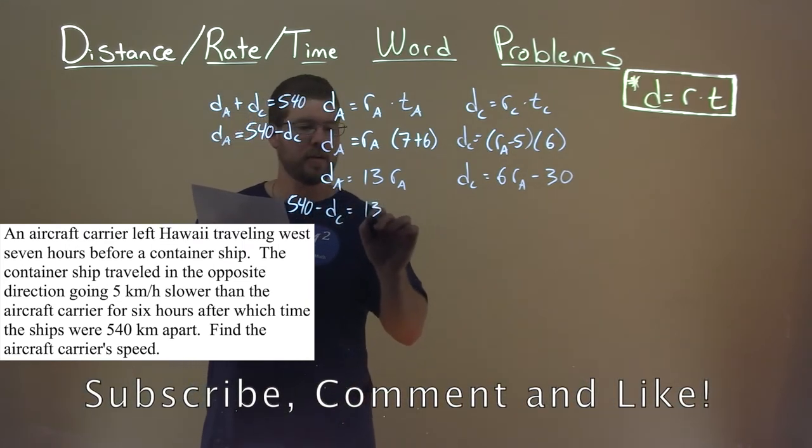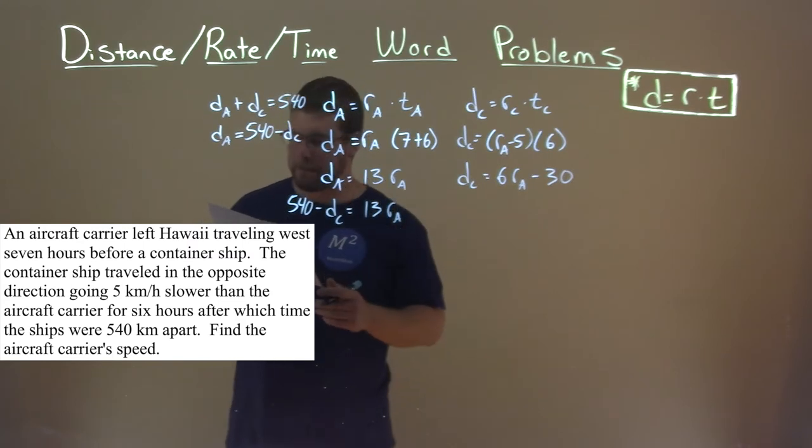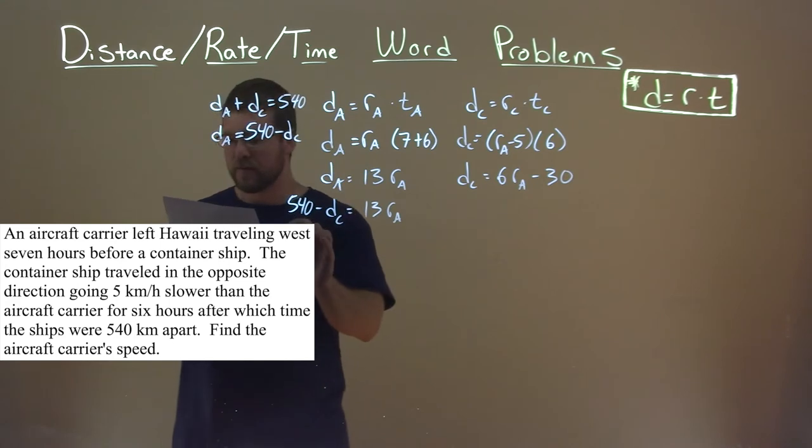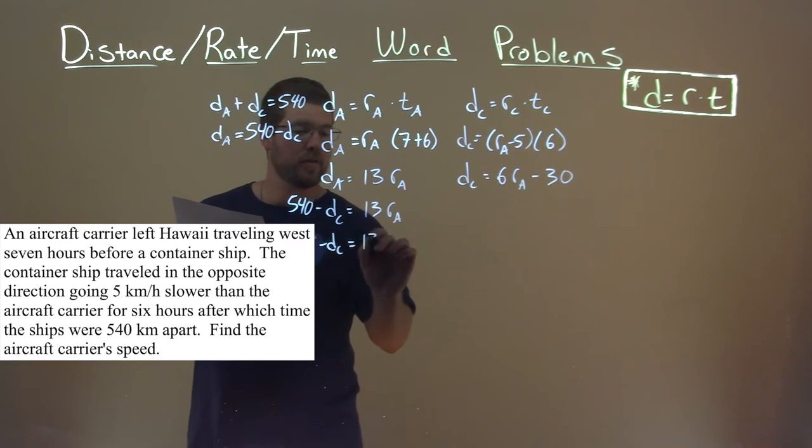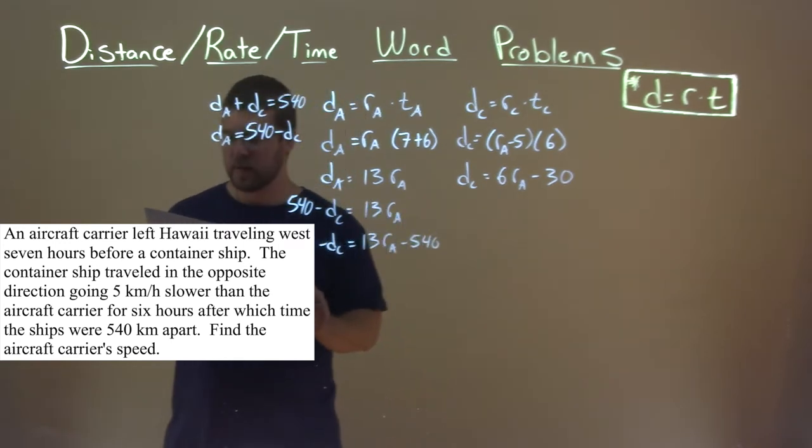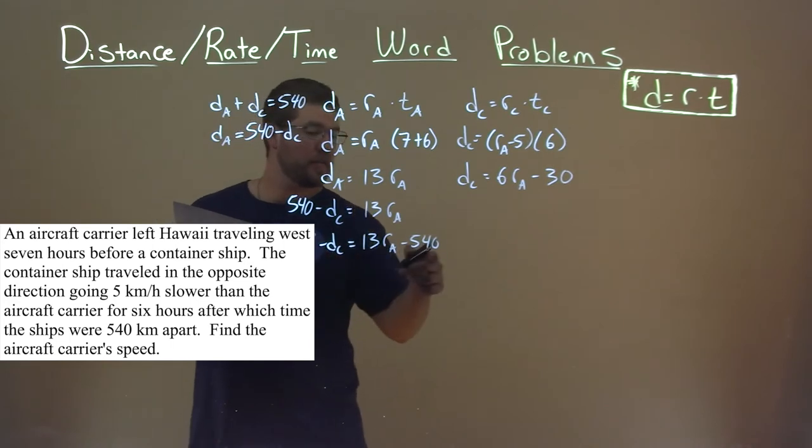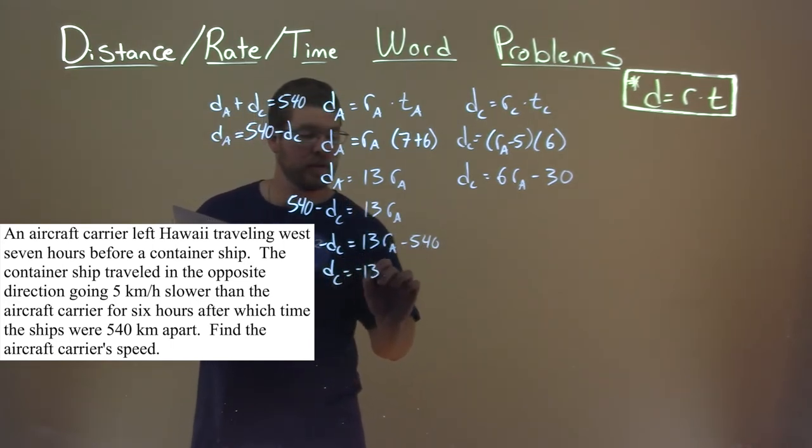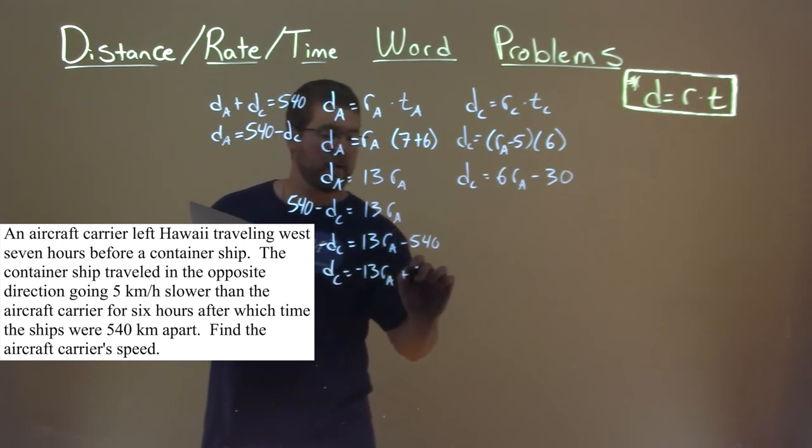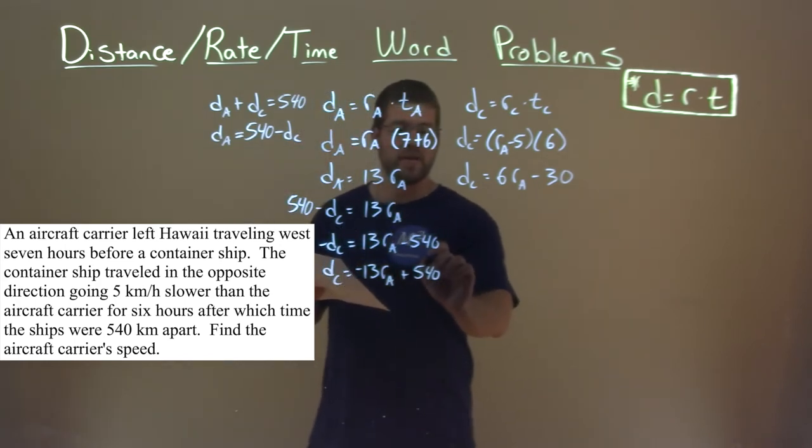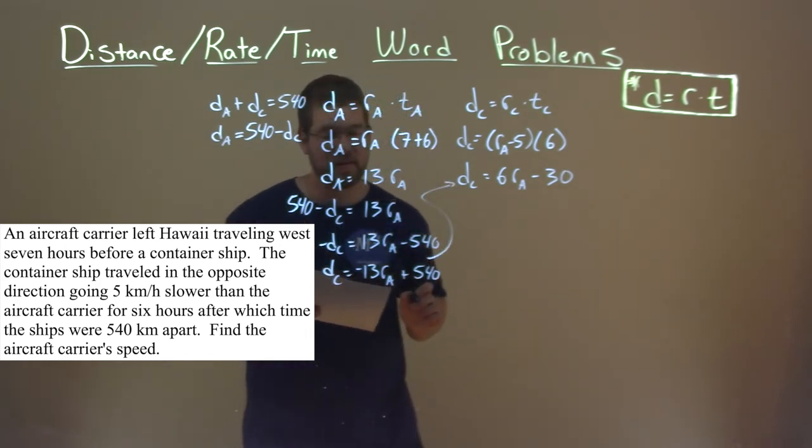Let's get D sub C by itself. Subtract 540 from both sides, and we have negative D sub C is equal to 13 R_A minus 540. If we bring this negative over to the other side, we have D sub C equals negative 13 R sub A, and then that's a positive 540.